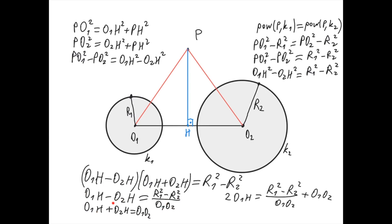Adding the two equalities O1H minus O2H and O1H plus O2H equals O1O2, the O2H terms cancel, giving 2 times O1H equals a fixed expression, so O1H is constant and doesn't depend on the choice of P. Therefore H has a fixed position. The set of points P with equal power with respect to both circles all drop their perpendicular to the line O1O2 at this fixed point H, meaning they all lie on the perpendicular line through H.